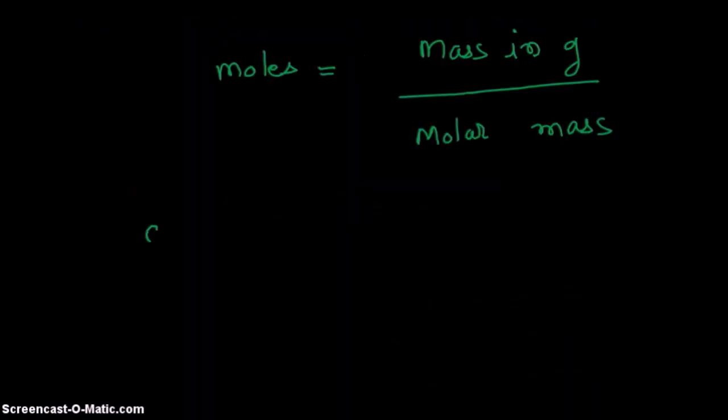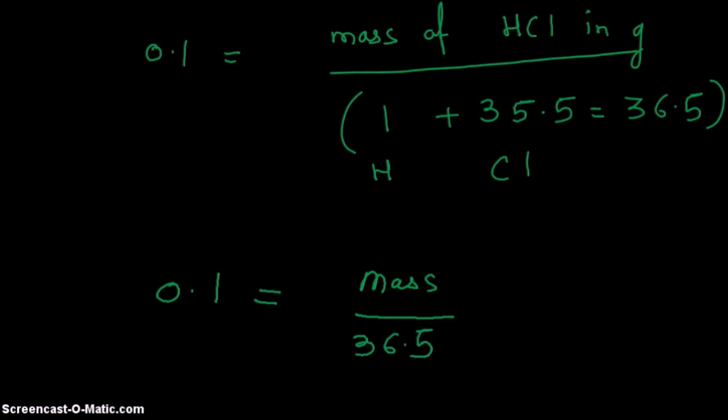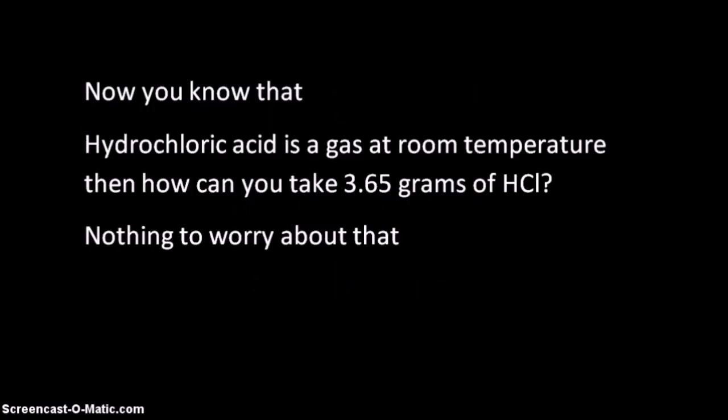Substituting the values in this equation: number of moles = mass in grams / molar mass. We rearrange to find the value of the mass, and the value of the mass comes out to be 3.65 grams. As already mentioned, HCl is gas at room temperature, but nothing to worry about that.